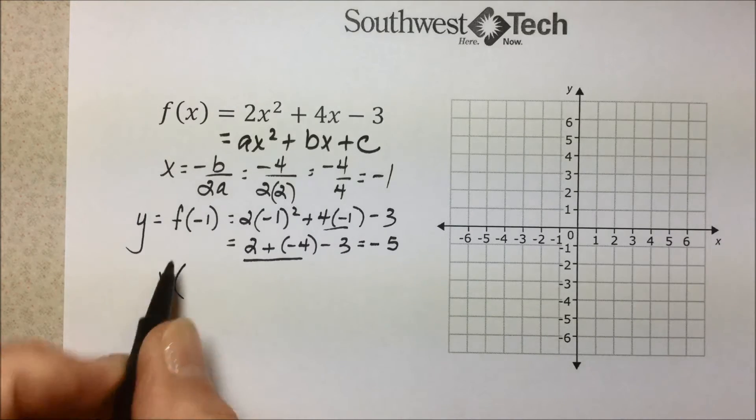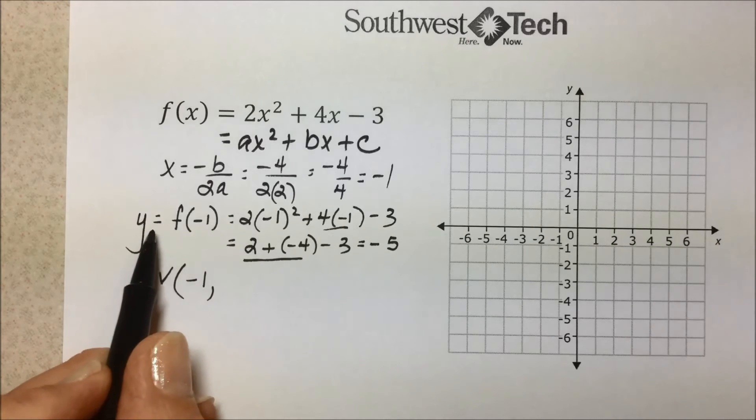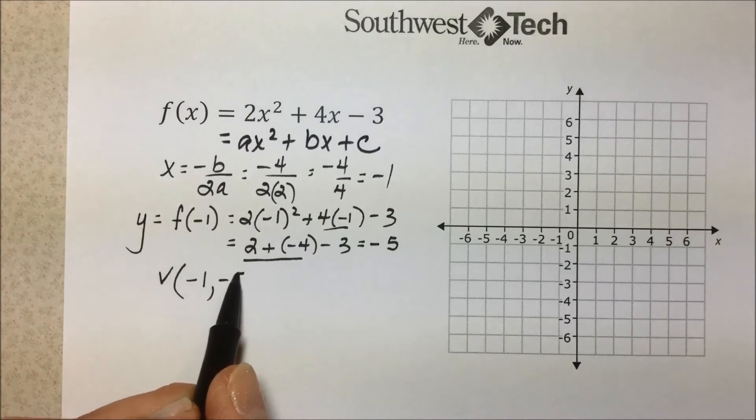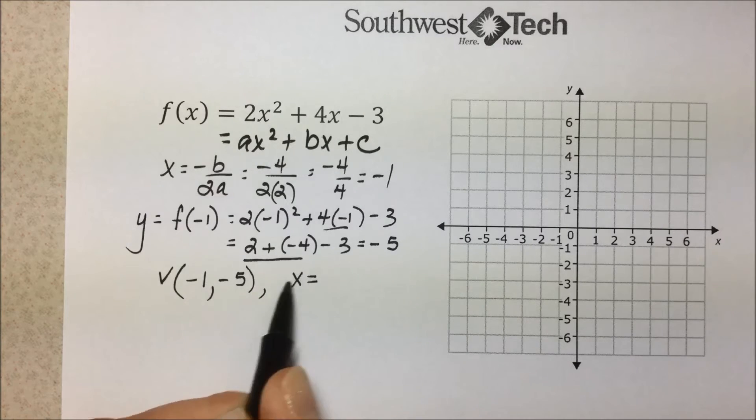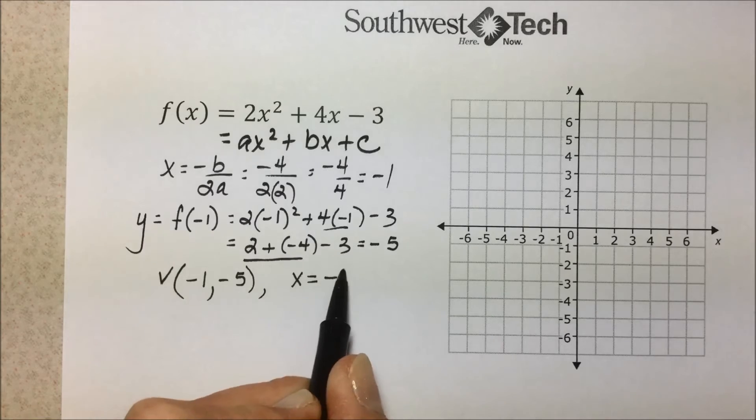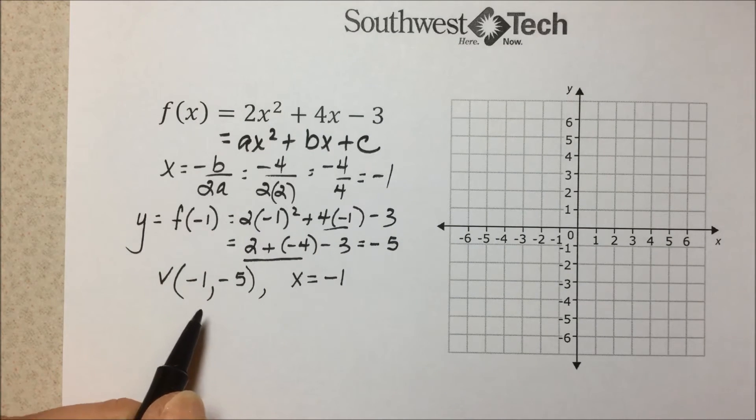So our vertex, which is -b/2a for x, f of that value gave us a -5. The axis of symmetry is x equal to the x value of the vertex.